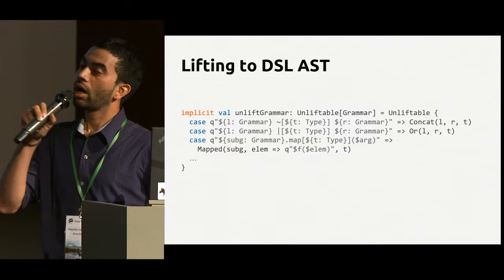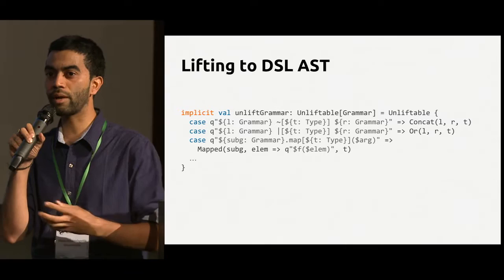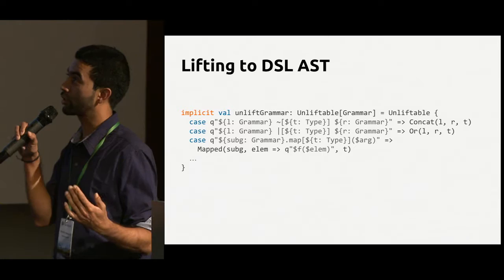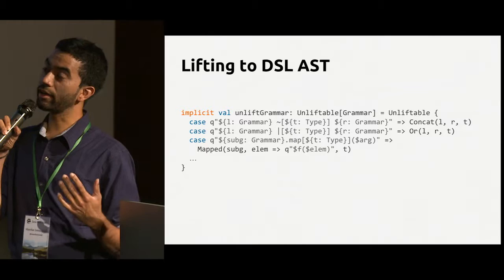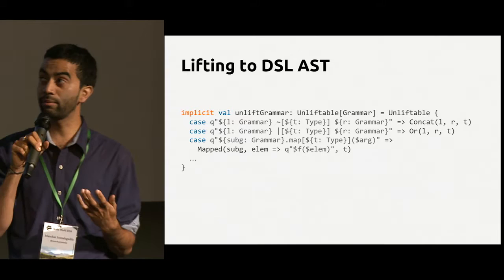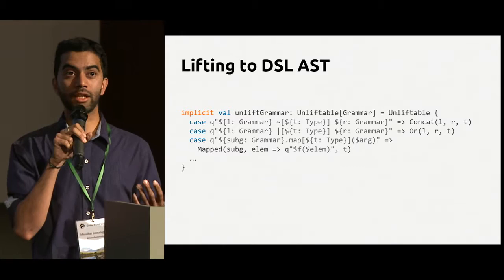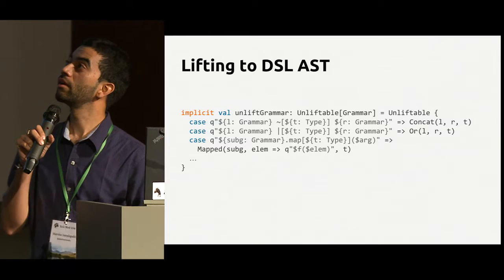The other step is how do you take and lift every grammar declared in the optimized macro scope to this grammar representation? You do this using quasi-quotes by providing an instance of unliftable of grammar. This is a very nice way to lift any code declared in a macro into your specific DSL. Once you have your own AST for grammars you can do fun stuff with them — exactly stage two.